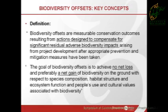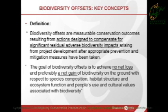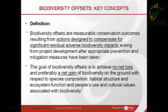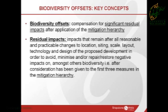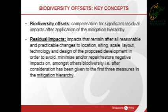Drawing from these sources, just to give you an idea of how biodiversity offsets are defined: essentially they are actions designed to compensate for significant residual adverse biodiversity impacts. The goal of biodiversity offsets is to achieve no net loss and preferably a net gain of biodiversity. In essence, it's compensation for significant residual impacts after application of the mitigation hierarchy.